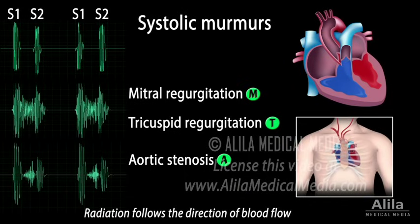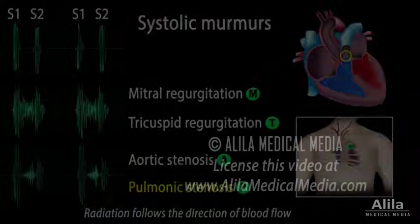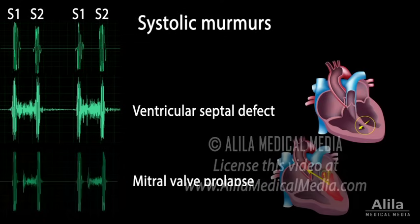Again, on the other side of the heart, pulmonic stenosis has the same characteristics, but is best heard in the pulmonic area and does not radiate to the neck. Other conditions that cause audible systolic murmurs include ventricular septal defect and mitral valve prolapse.